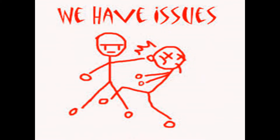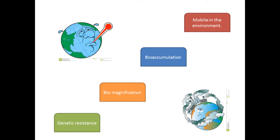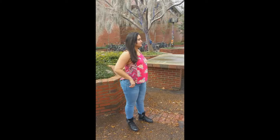Some of the issues related to pesticides is that they're mobile in the environment. They also cause a lot of bioaccumulation and biomagnification in the environment. And some of the pests develop genetic resistance.